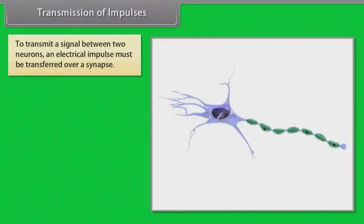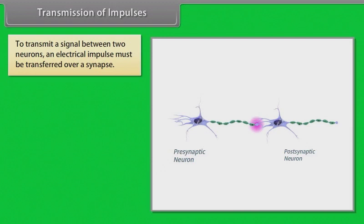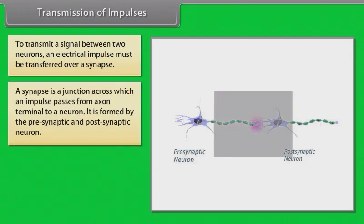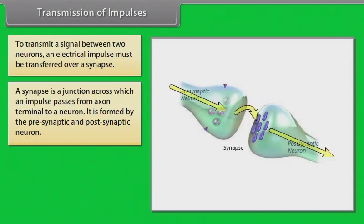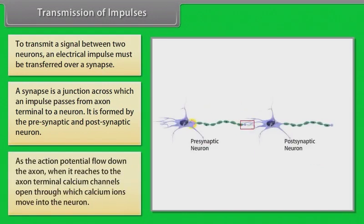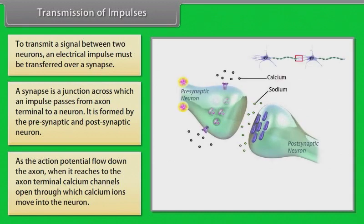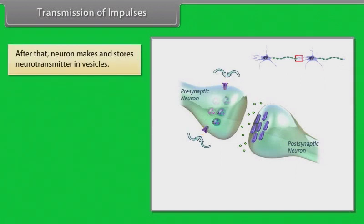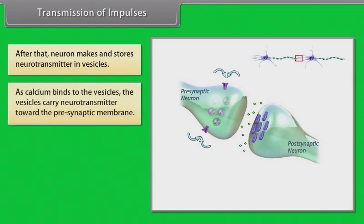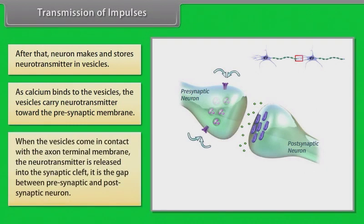To transmit a signal between two neurons, an electrical impulse must be transferred over a synapse. A synapse is a junction across which an impulse passes from the axon terminal to a neuron, formed by the pre-synaptic and post-synaptic neuron. As the action potential reaches the axon terminal, calcium channels open and calcium ions move into the neuron. The neuron stores neurotransmitters in vesicles, and as calcium binds to them, vesicles carry neurotransmitters toward the pre-synaptic membrane, releasing them into the synaptic cleft.